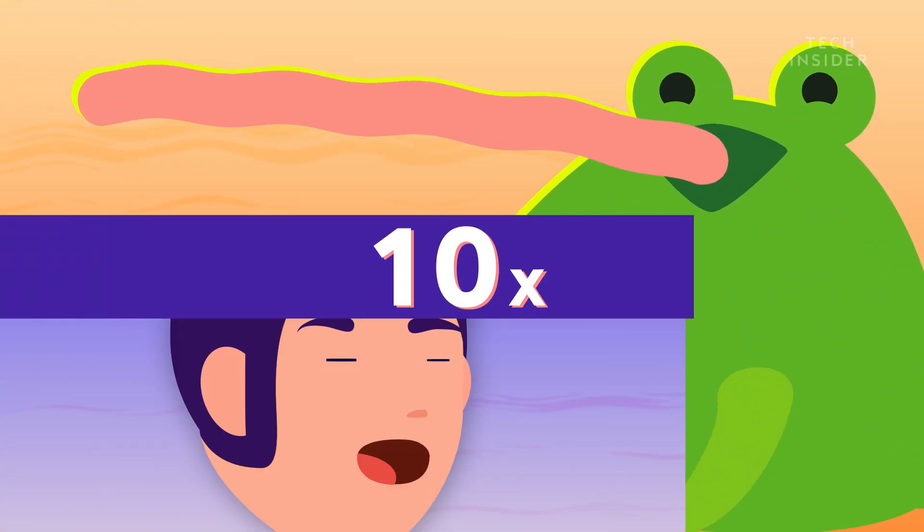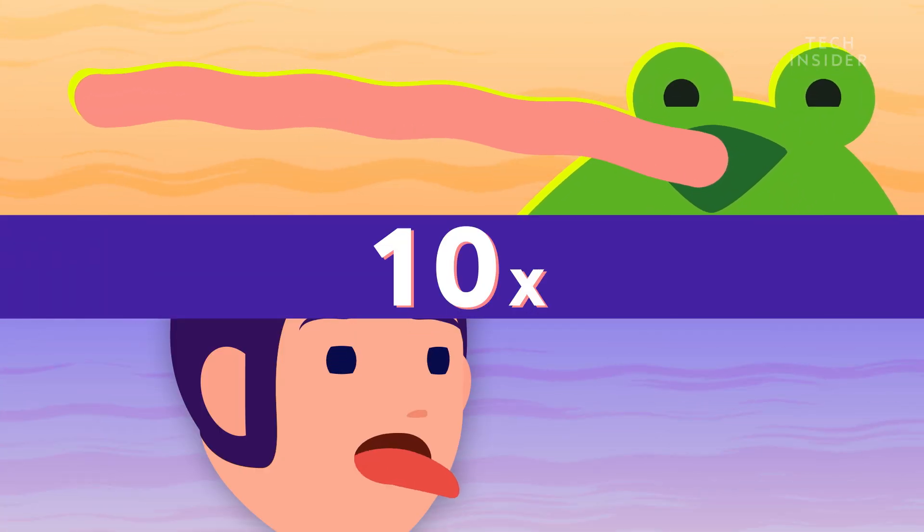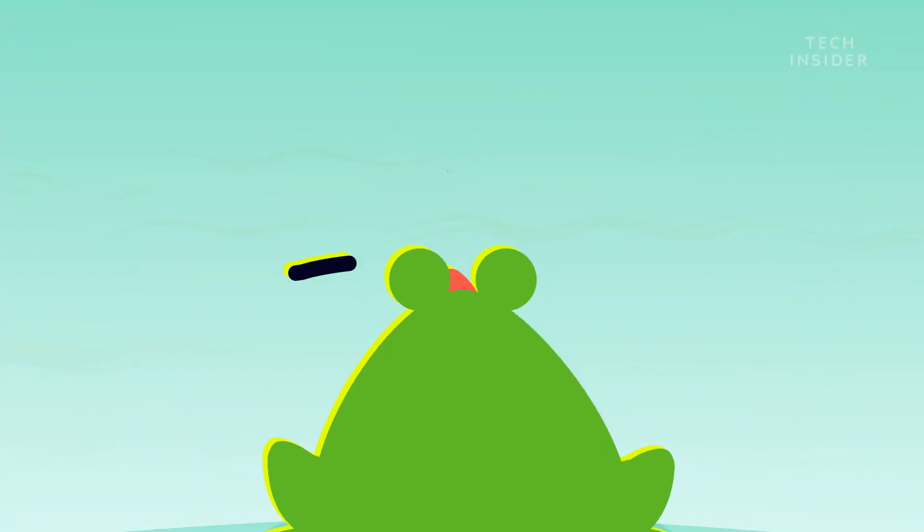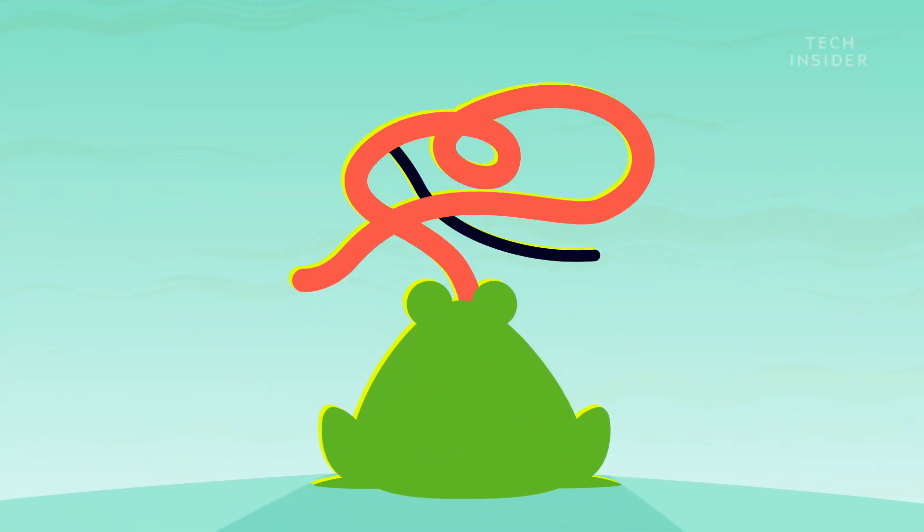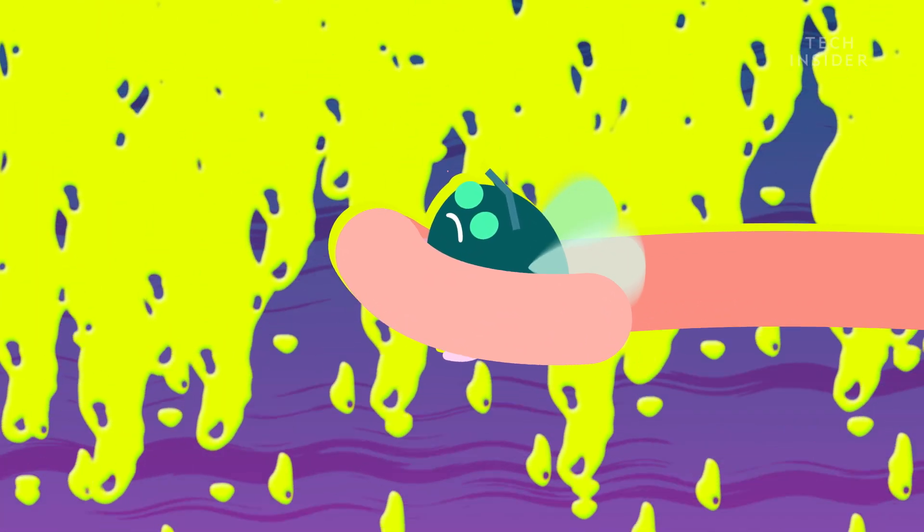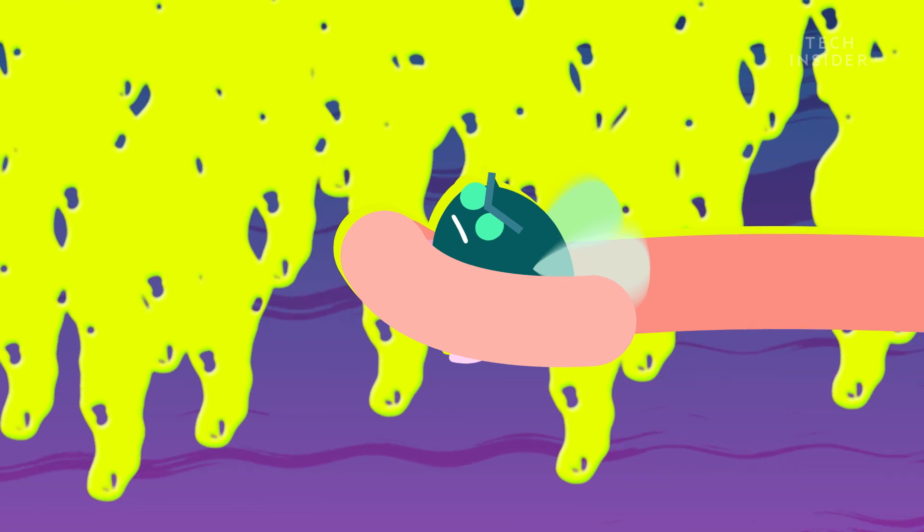A frog's tongue is 10 times softer than ours, about as pliable as your brain, in fact. And this softness makes it super flexible, so it can wrap itself around its victim, slathering the fly with a super sticky saliva, trapping it in place like glue.